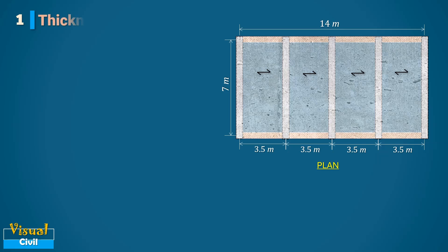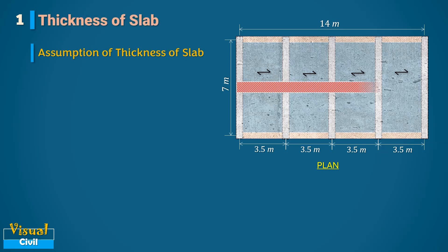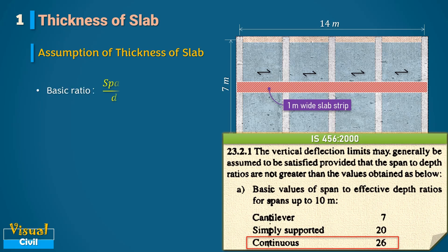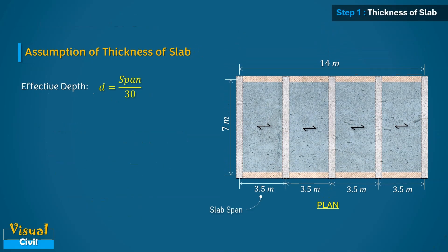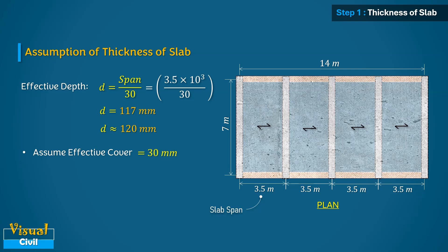One-way RCC slabs supporting floor or roof loads are generally designed as beams of unit width. For a given support condition, the span-to-depth ratio applicable for beams in IS 456 is also valid for slabs. Since the percentage of reinforcement in a slab is generally low, in the range of 0.3 to 0.5%, a span-to-depth ratio of 25 to 30 is more appropriate considering the modification factor for Fe415 steel. We consider a span-to-depth ratio of 30, giving an effective depth of 120 mm. With an effective cover of 30 mm, the total slab thickness is 150 mm.